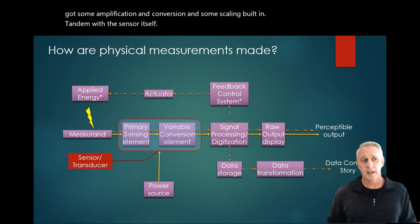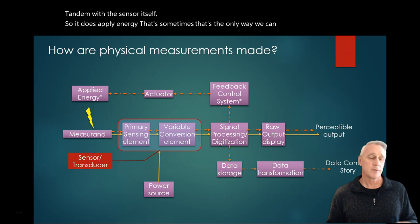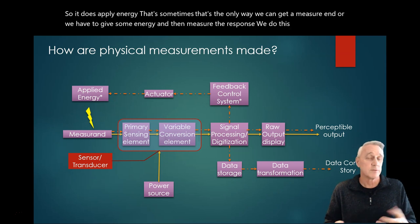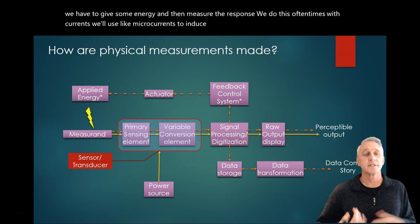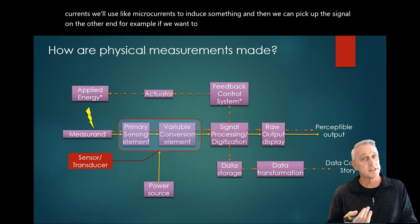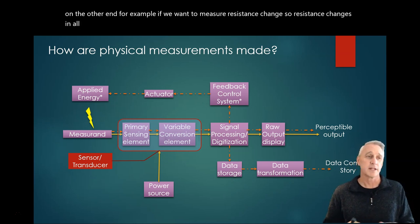Sometimes we apply energy. That's the only way we can get a measure in, where we have to give some energy and then measure the response. We do this oftentimes with currents. We'll use micro-currents to induce something, and then we can pick up the signal on the other end. For example, if we want to measure a resistance change. Resistance changes in all sorts of things, and we'll talk about that later.